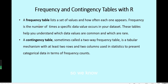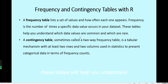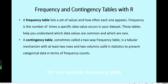A frequency table will list a set of values and how often — counts for each value. And in R, these tables will help you understand how often some values for specific variables occur. A contingency table means a two-way, or two-variable, frequency table.